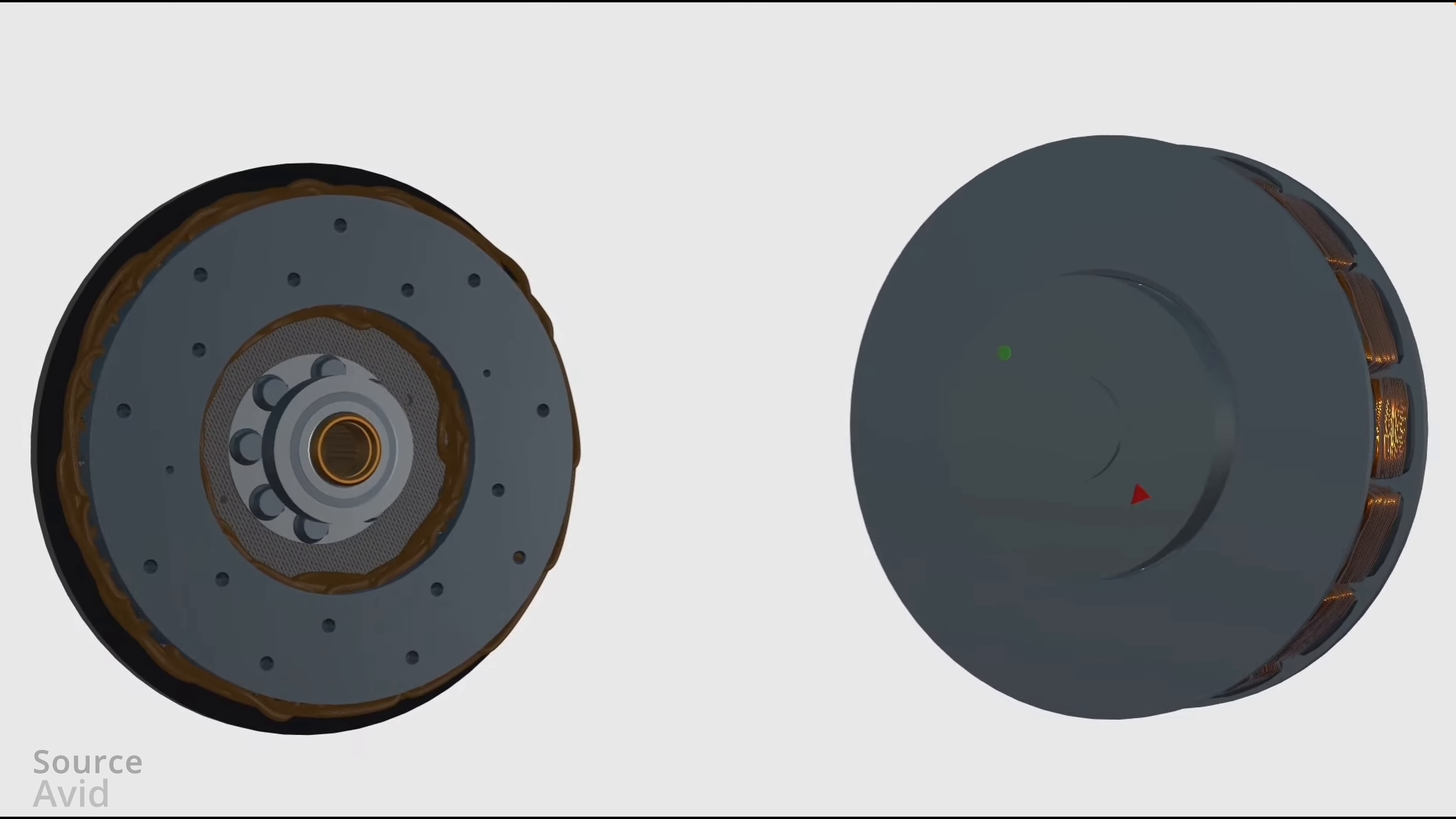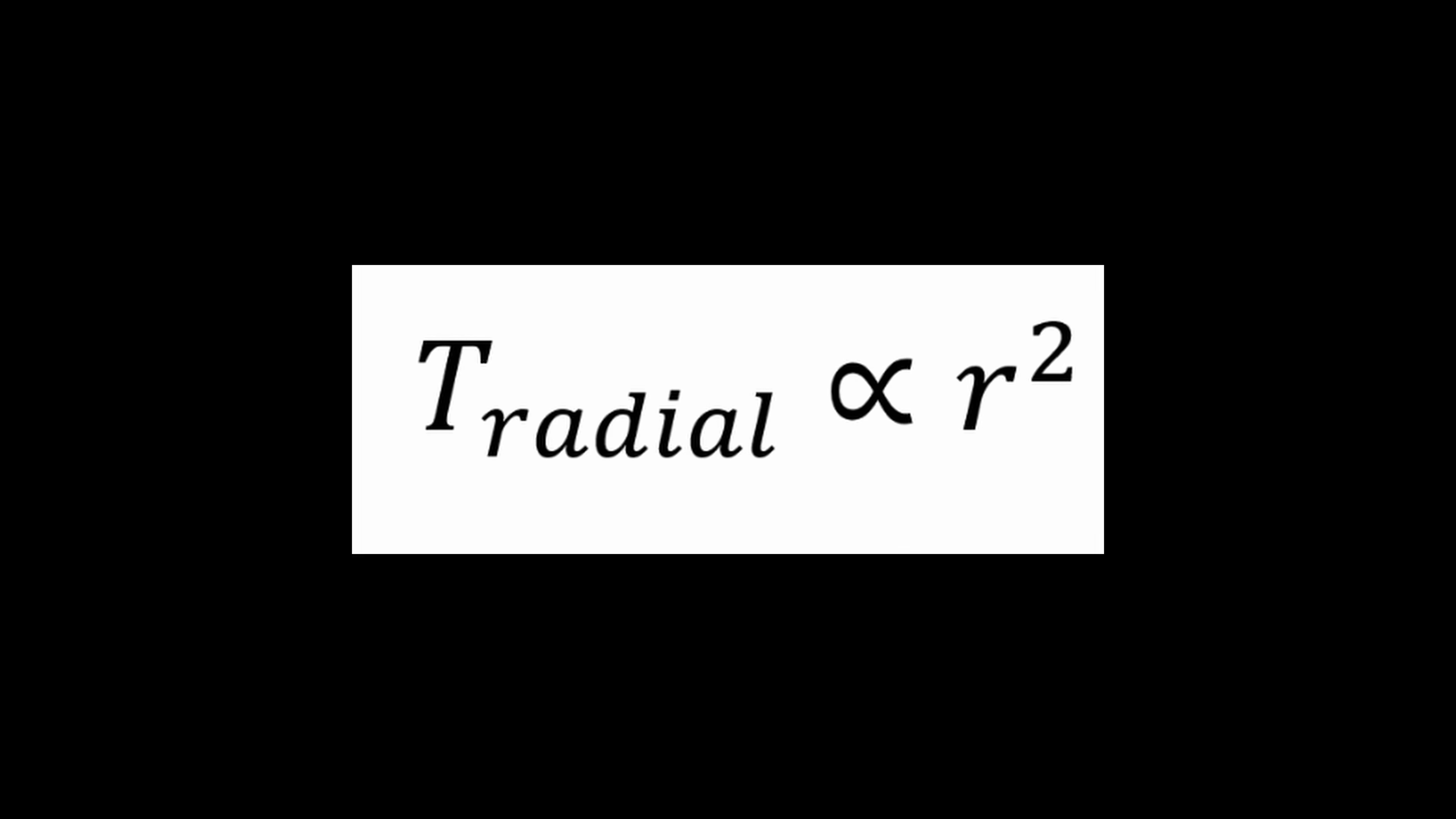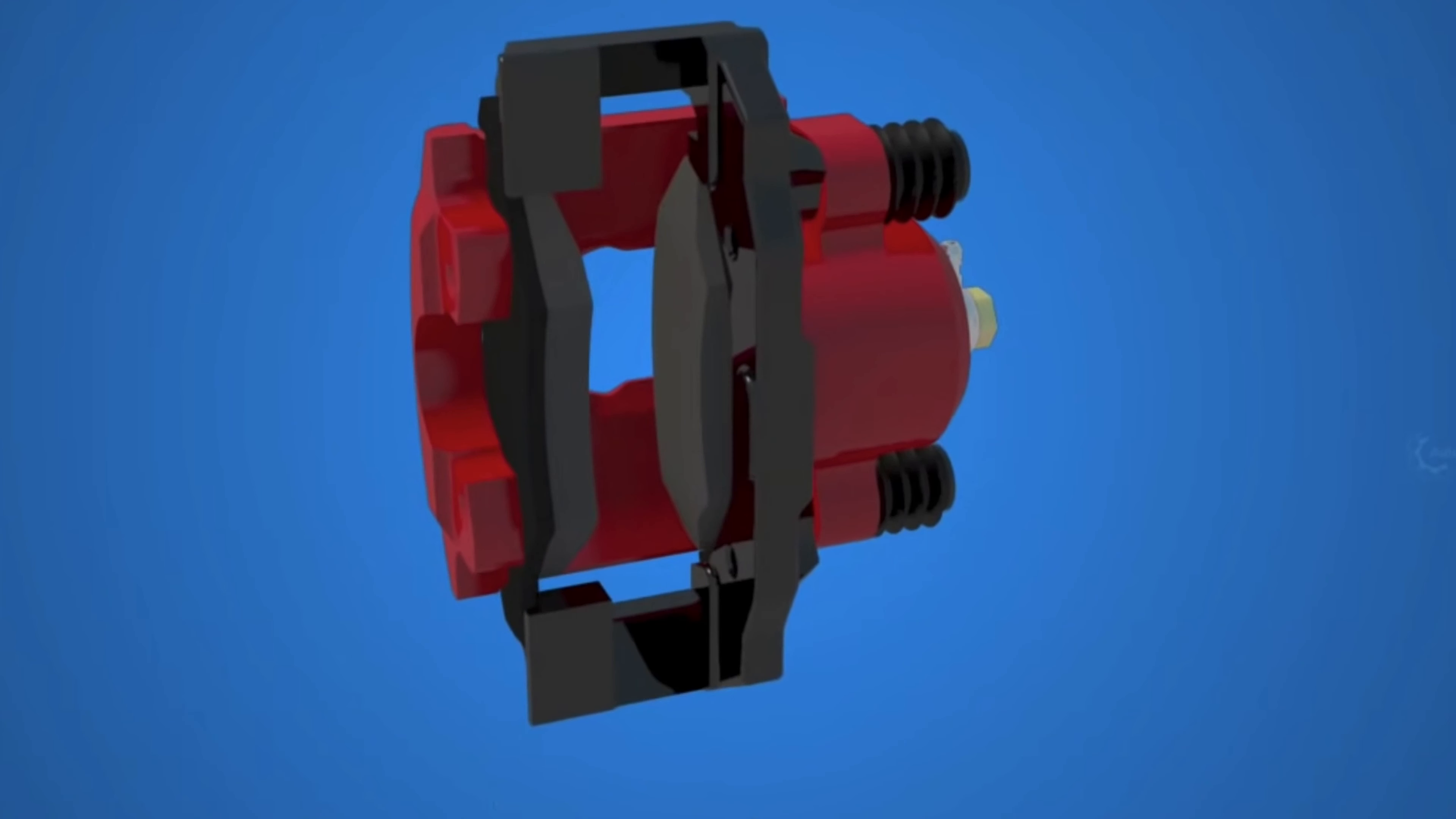Analyzing the air gap surface areas and moment arms, we can derive that the torque in the radial flux machine is proportional to the second power of the machine diameter. In the axial flux machine, however, it is proportional to the third power of the diameter.